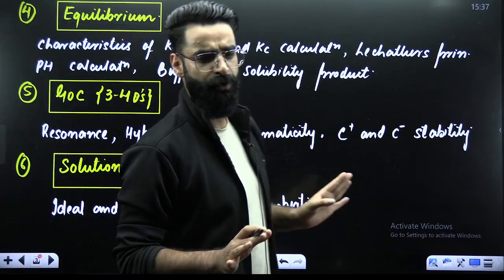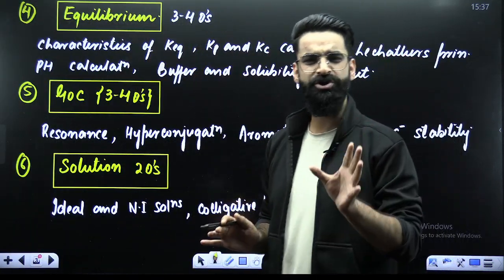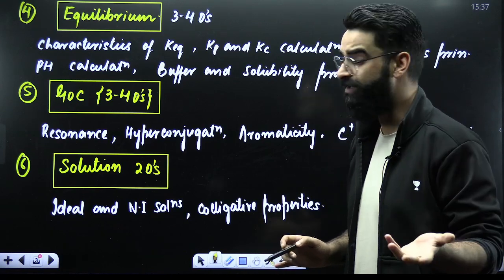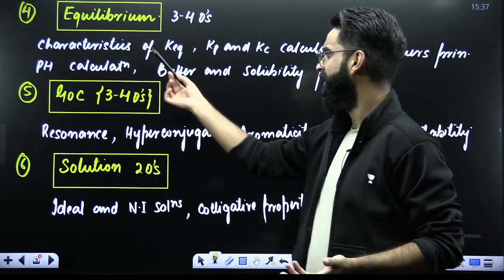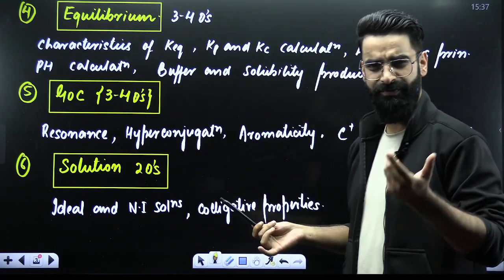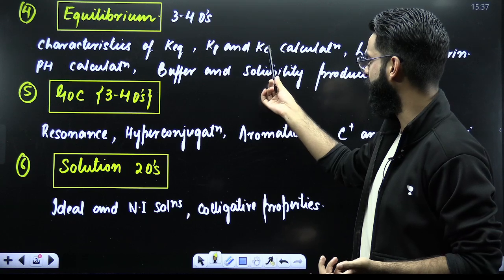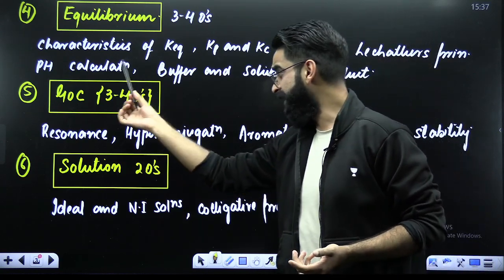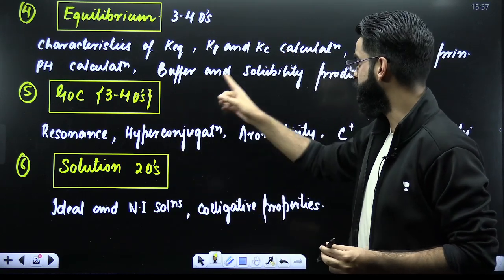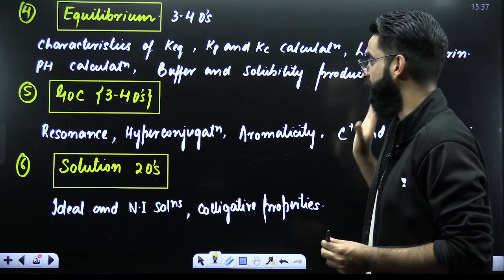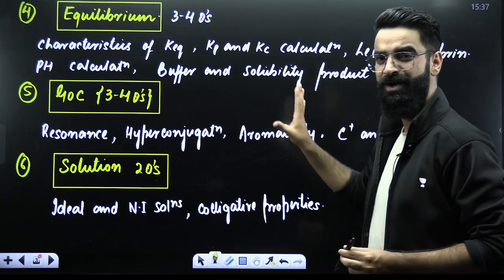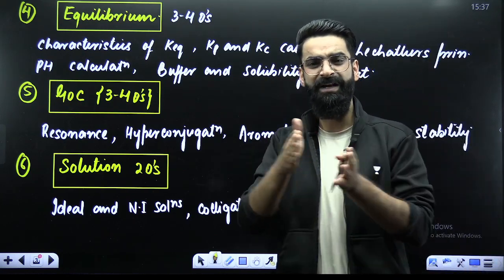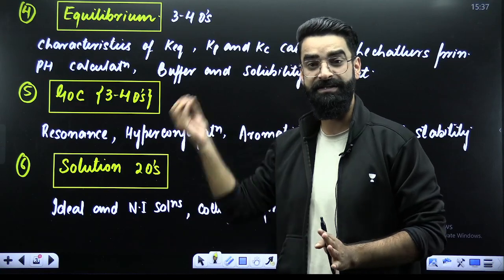Equilibrium — every year almost three to four questions. The short topics from which questions are framed: characteristics of equilibrium constant, Kp and Kc calculation, Le Chatelier's principle, pH calculation, buffer solutions, and solubility product. These are the topics in the chapter equilibrium — both chemical and ionic equilibrium — which you are going to prioritize the most.